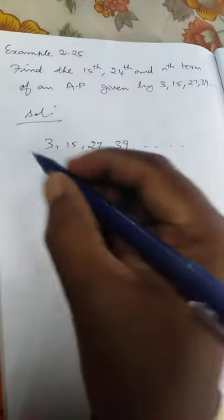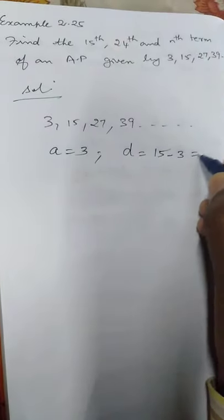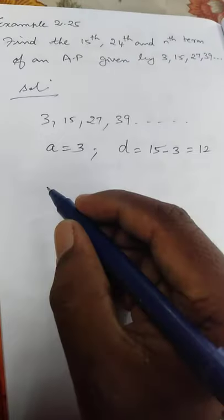This is an AP. A is the first term. First term is 3. D is the common difference. Second term 15 minus first term is 3. 15 minus 3, 12.